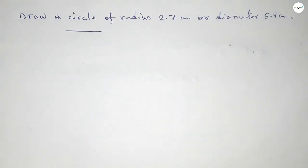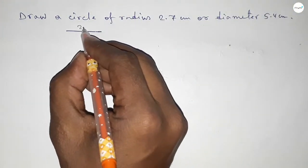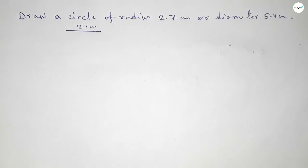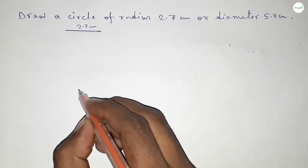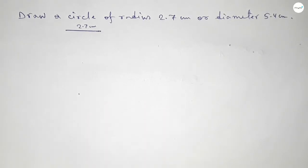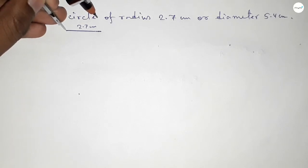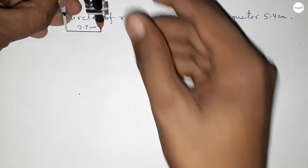So this is 2.7 centimeter. Next, taking here a point. Now taking the length 2.7 centimeter by using compass by this way.